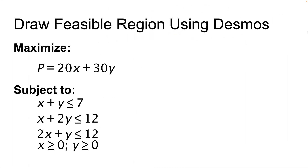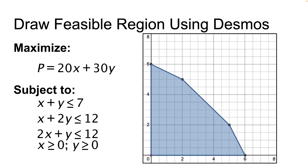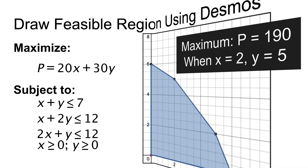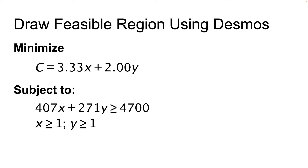To summarize: we wanted to maximize p equals 20x plus 30y subject to five constraints. We used Desmos to draw the feasible region, which was a five-sided polygon. We found the five corners, evaluated the objective function at those corners, and found a maximum value of p equal to 190, occurring when x was 2 and y was 5. Now let's take a look at a second example.